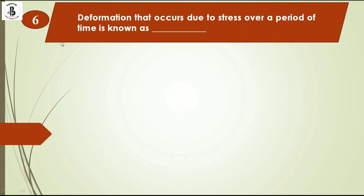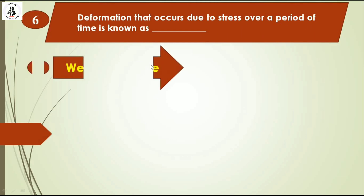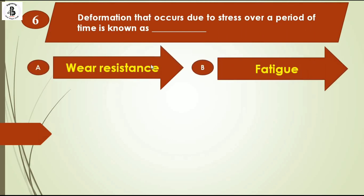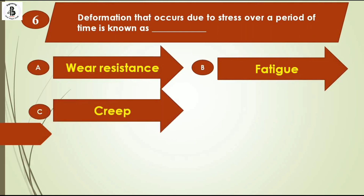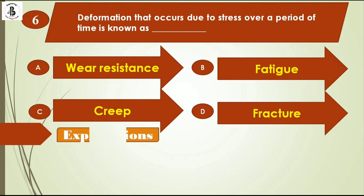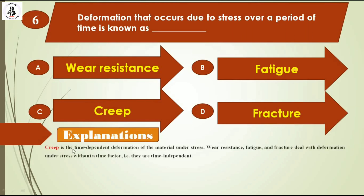Deformation and damage occurring due to stress over a period of time is known as: option A wear resistance, option B fatigue, option C creep, option D fracture. Creep is a time-dependent deformation of the material under stress. Wear resistance, fatigue, and fracture deal with deformations under stress without a time factor. Creep is related to time-dependent deformation and occurs at higher temperatures over longer periods. So the right answer is option C.